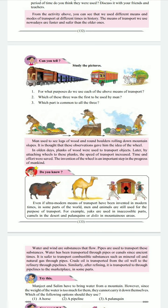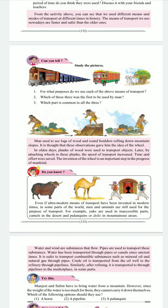Water and wind are substances that flow. Pipes are used to transport these substances. Water has been transported through pipes or canals since ancient times. It is safer to transport combustible substances such as mineral oil and natural gas through pipes. Crude oil is transported from the oil well to the refinery through pipelines. Similarly, after refining, it is transported through pipelines to the marketplace in some parts.